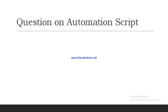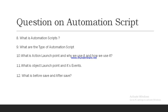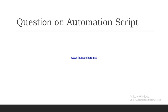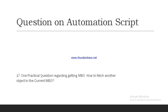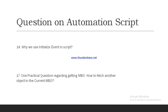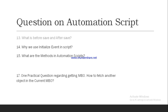Further questions on automation scripts: why do we use the initialize event in a script? The initialize event exists in both the attribute launch point and the object launch point. He also asked: what are the methods in the automation script? And then: when do we use MBO versus MBO set? We have both MBO and MBO set in automation scripts, so you need to be able to explain the difference.